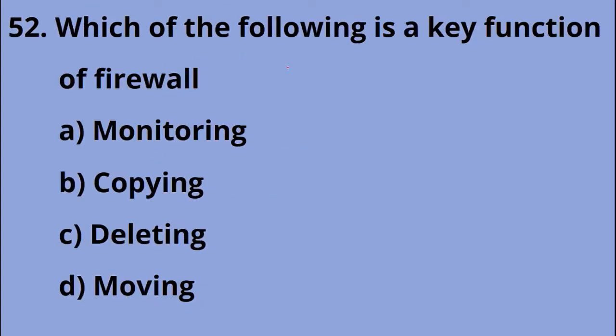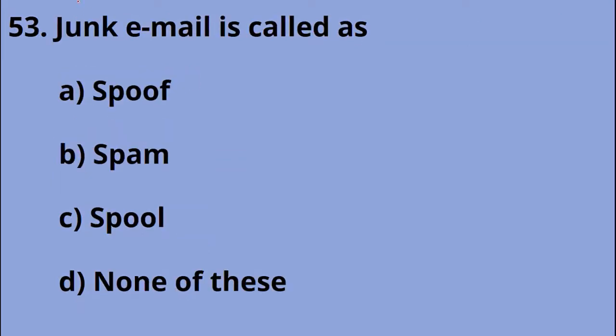Which of the following is the key function of a firewall? The firewall's key function is Option A, monitoring. Junk email is called Option B, Spam.